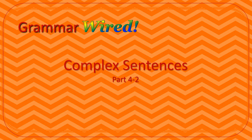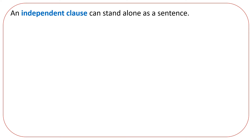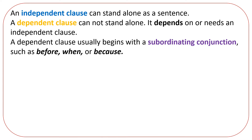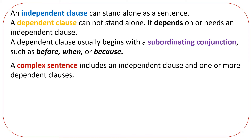Complex sentences. An independent clause can stand alone as a sentence. A dependent clause cannot stand alone — it depends on or needs an independent clause. A dependent clause usually begins with a subordinating conjunction such as before, when, or because. A complex sentence includes an independent clause and one or more dependent clauses.